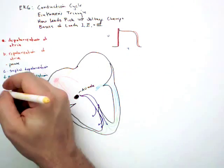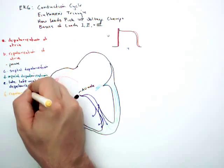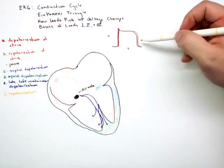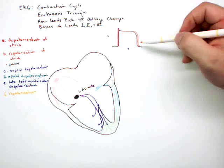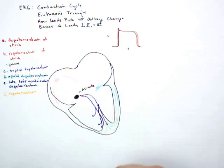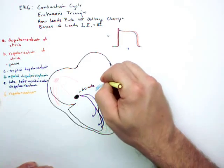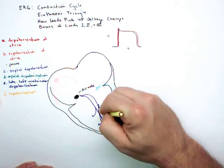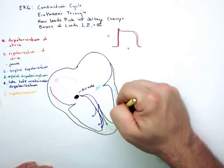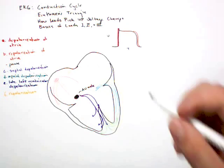Our last step is repolarization. You might be noticing something different here. When we talked about the atria, we depolarize and repolarize right away. It doesn't work that way in the ventricles. In the ventricles, you depolarize all of the muscle and then repolarize it, and you reverse the path completely. Okay, so that's the conduction cycle.